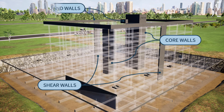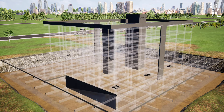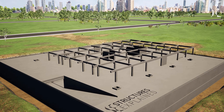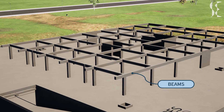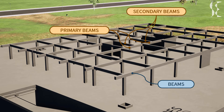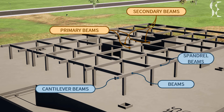Lastly under the walls category comes upstand walls, which are reinforced concrete walls usually of lesser height and thickness and having one end free. These walls are generally present as parapet walls around openings and on the ground where some retention is required. Next in the superstructure comes floor beams, which take load from the slab and transfer it to columns, shear walls, and core walls. Beams are of two types: primary beams, which are directly connected to columns or shear walls, and secondary beams, which connect to primary beams and transfer load from slab to primary beams. Beams with one end free are called cantilever beams, and beams that run on the perimeter of the building are called spandrel beams.